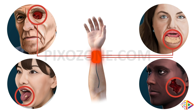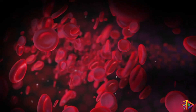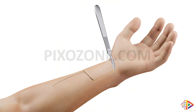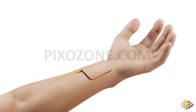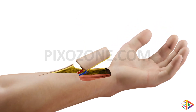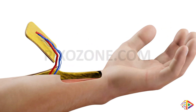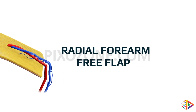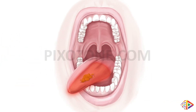A flap is the transfer of tissue from one site, the donor site, to another, the recipient site, with its own blood supply. For head and neck defects we commonly use the radial forearm free flap. There are other alternatives to using this flap, each with its own advantages and disadvantages, which you can discuss further with your surgeon. However, the radial forearm free flap is one of the most reliable for reconstruction in the head and neck region.